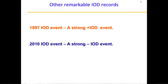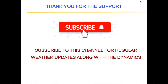Other remarkable IOD records include 1997, which was a strong positive IOD event, and 2010, which was a strong negative IOD event. These are the record-breaking IOD events; moderate or weak events have occurred almost every year over the last one to two decades, but only the strong events significantly impact India. I hope you learned something about the Indian Ocean Dipole — its physics, its different modes, its importance, and how it forms through equatorial ocean waves. Thank you for the support, please subscribe to this channel for regular weather updates and educational videos. Have a good day, bye.